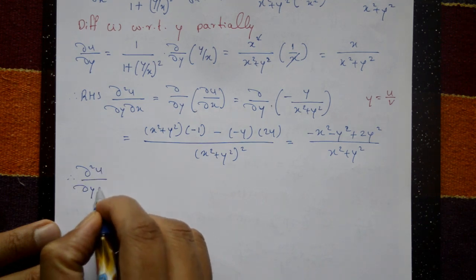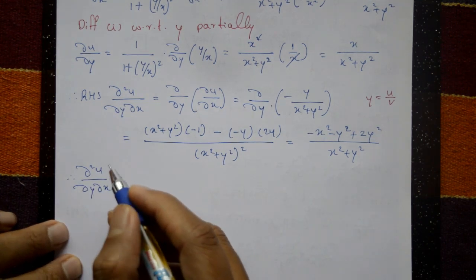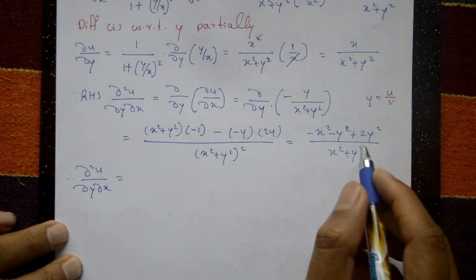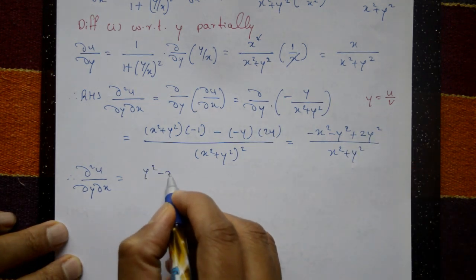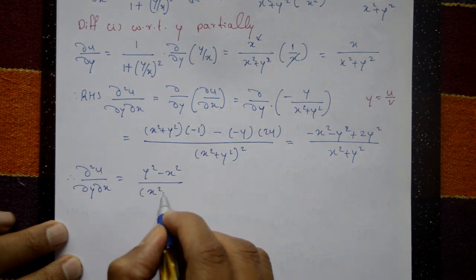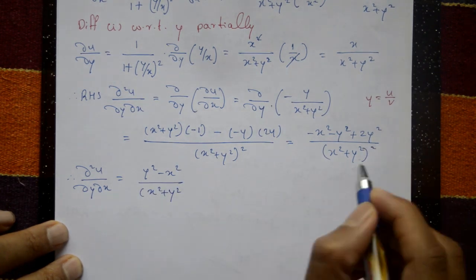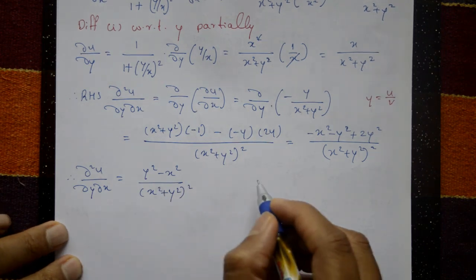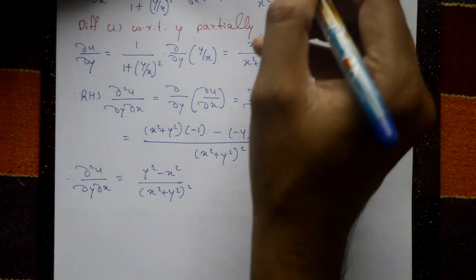Therefore ∂²u/∂y∂x equals (y² − x²) divided by (x² + y²) whole squared. This is the right hand side.